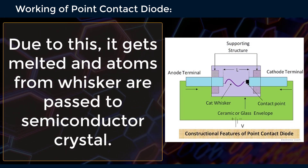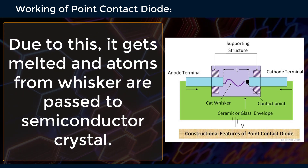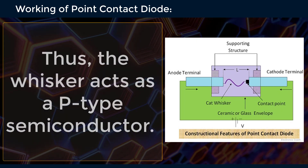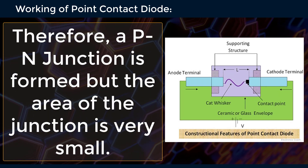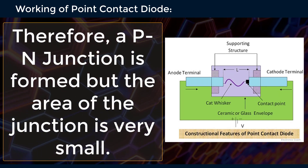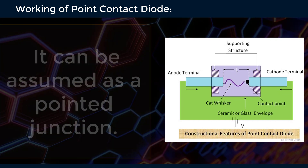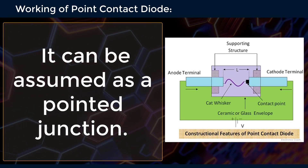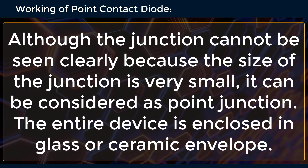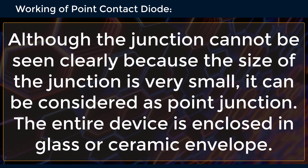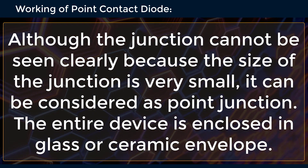Due to this heating, the semiconductor gets melted and atoms from the whisker are passed to the semiconductor crystal. Thus, the whisker acts as a p-type semiconductor. Therefore, a p-n junction is formed, but the area of the junction is very small. It can be assumed as a pointed junction. Although the junction cannot be seen clearly because the size is very small, it can be considered as a point junction.